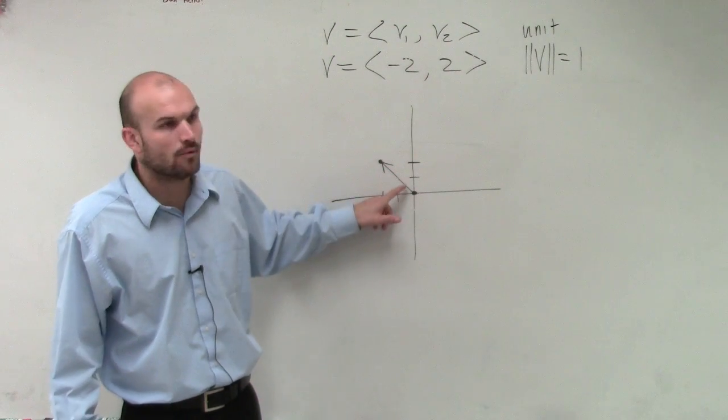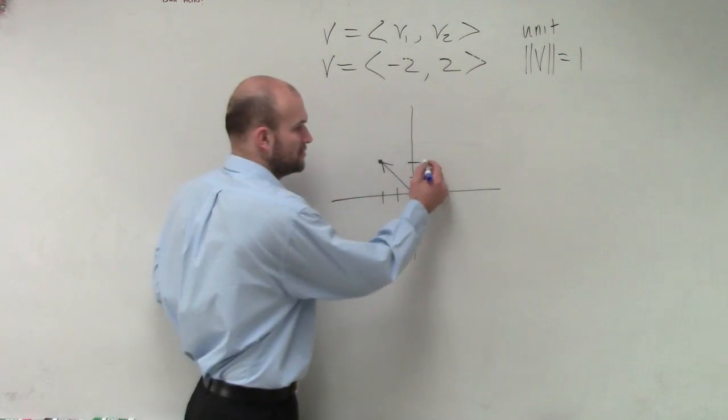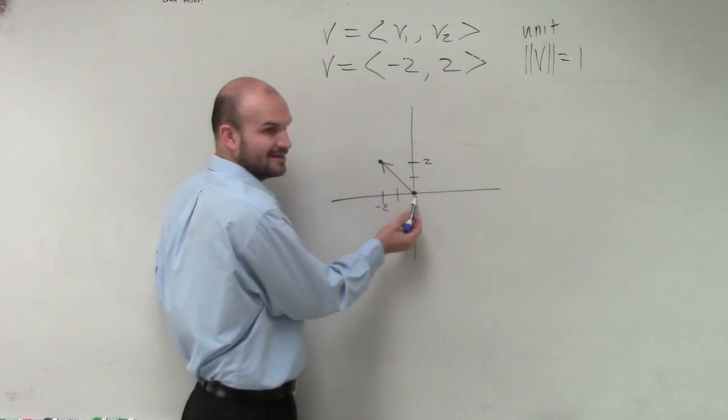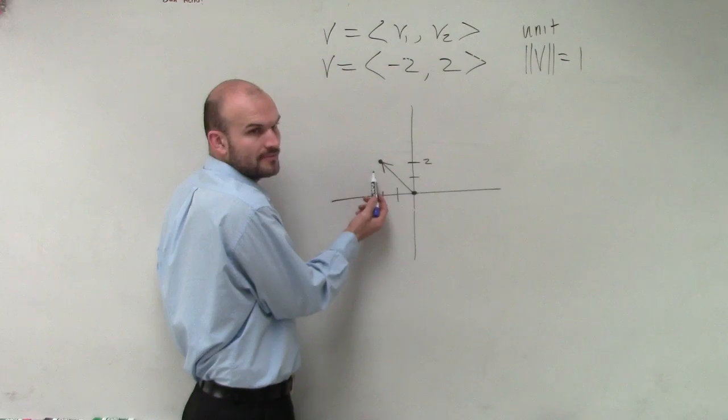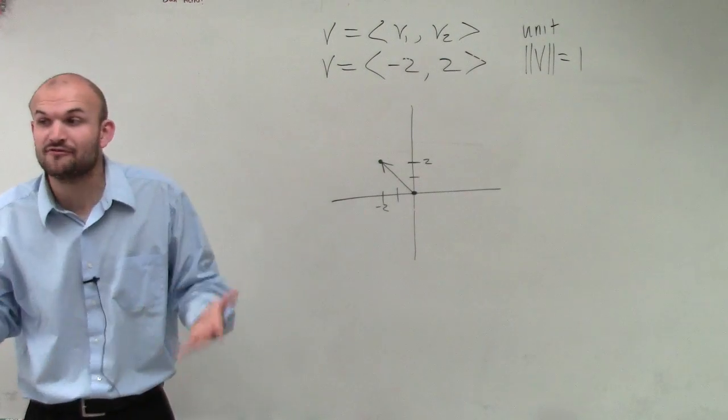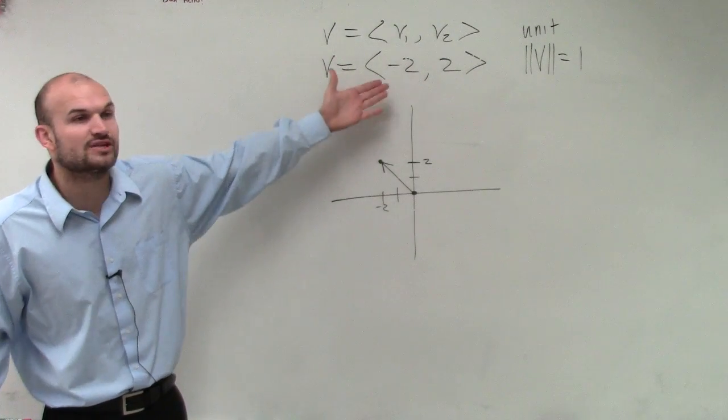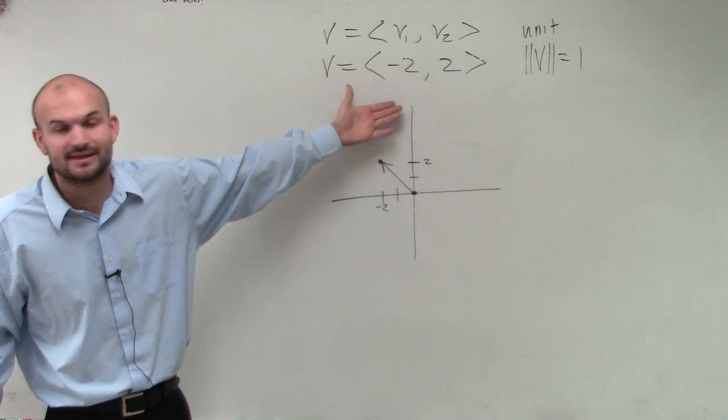So the distance is not 1. This is up 2, negative 2. So if you're going to negative 2, 2, there's no way that this length is 1. So therefore, what we need to do is we need to figure out, we need to write this as its unit vector.